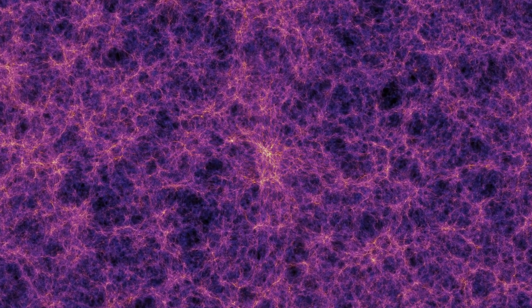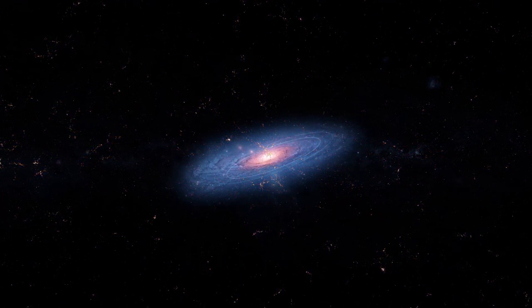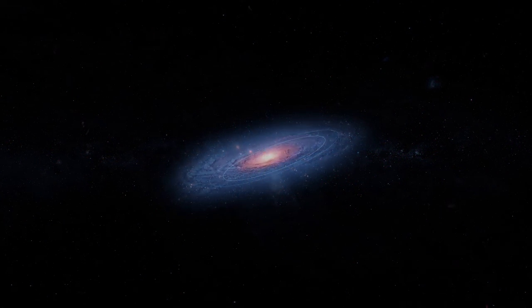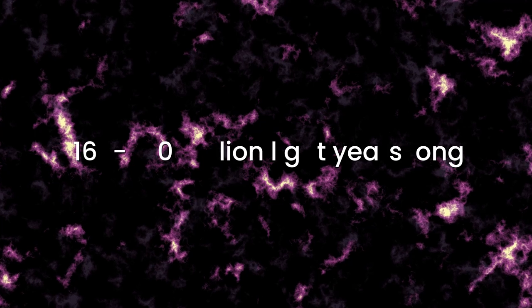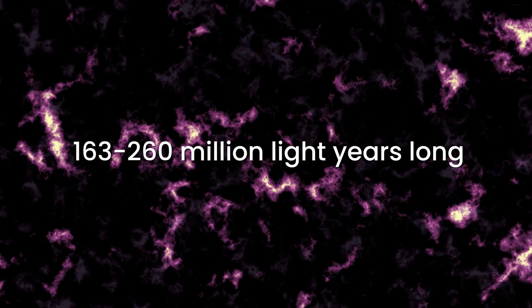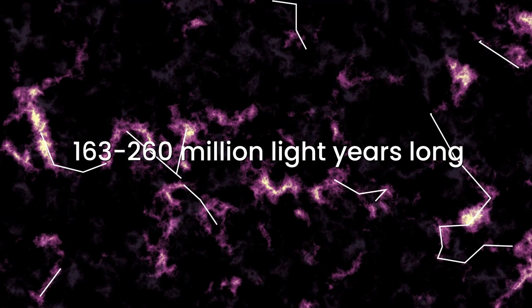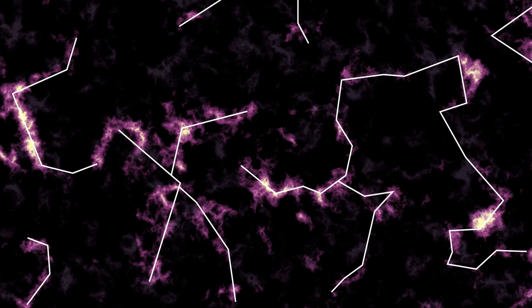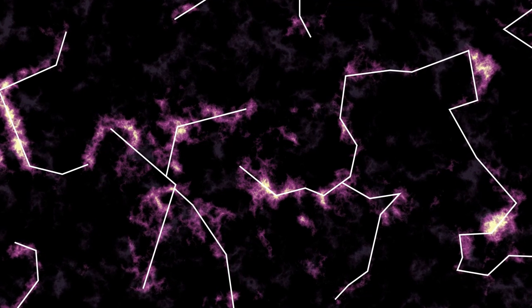Scientists soon realized that the structure of the universe is much more complex than previously thought. That superclusters of galaxies are, for some reason, elongated in the form of threads 163 to 260 million light-years long. And essentially, the universe resembles a giant, three-dimensional web or network.